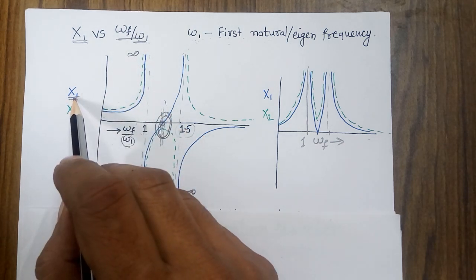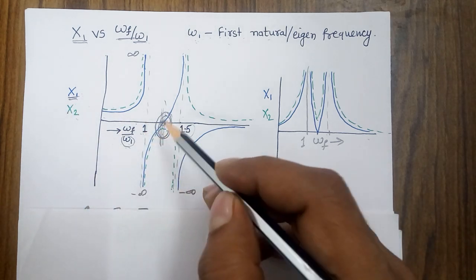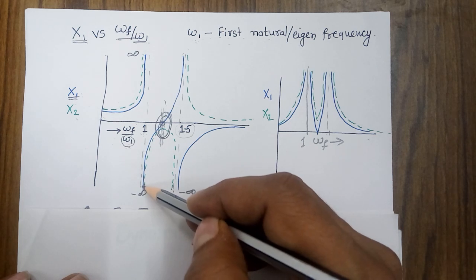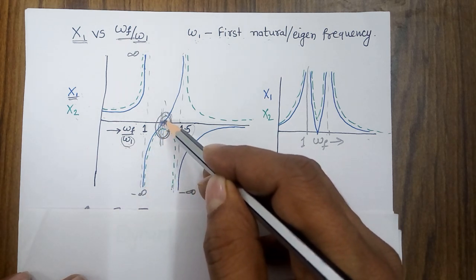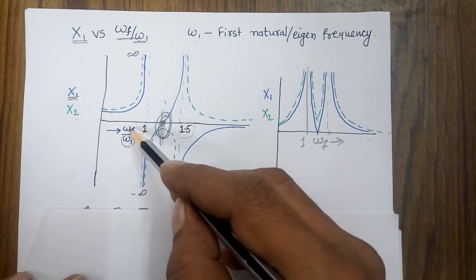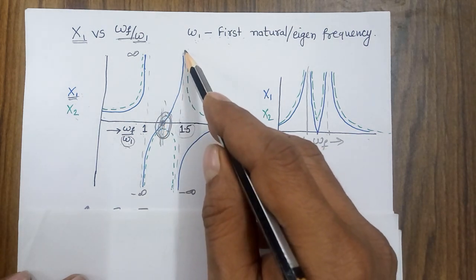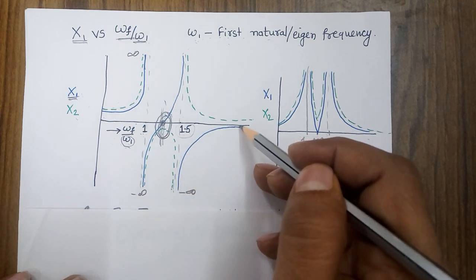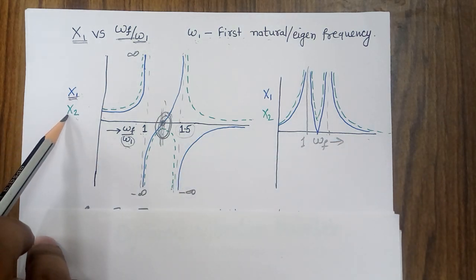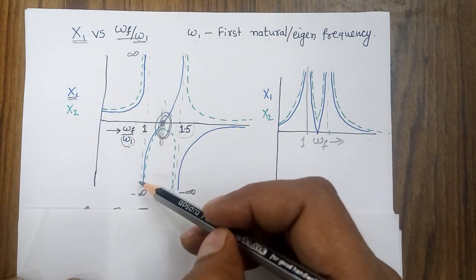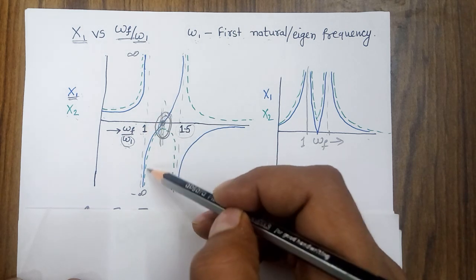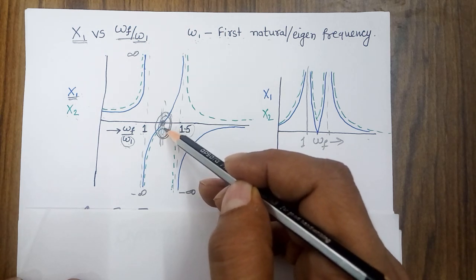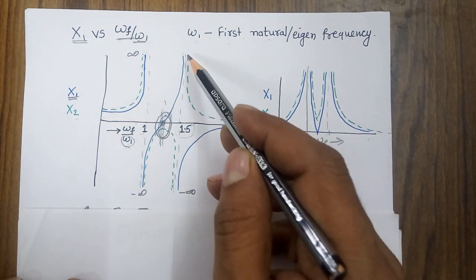The solid line corresponds to the first mass. As frequency increases beyond the first resonance, the formula gives a negative value tending to negative infinity, then the response becomes zero at a certain excitation frequency value, rises again to positive infinity, and then follows a similar pattern at the second resonance. For the second mass, shown with a similar pattern, it goes to infinity at the first resonance, approaches zero near the anti-resonance of the first mass, then goes to negative infinity and back, following the same general trend.